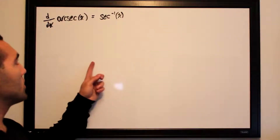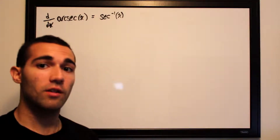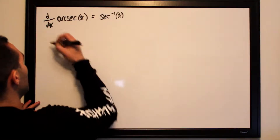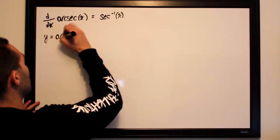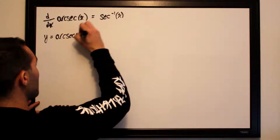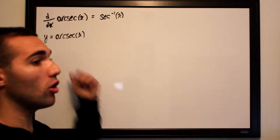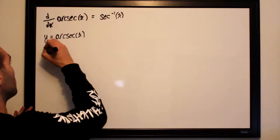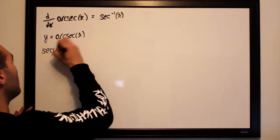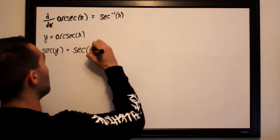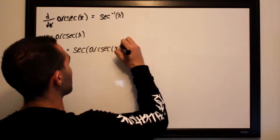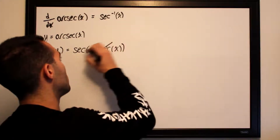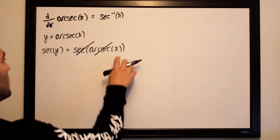First, we're going to take advantage of the fact that secant and arc secant are inverses of each other so we can isolate for x. We set y equal to arc secant of x, and we want x all alone. So we take the secant of both sides to cancel the arc secant out: secant of y equals secant of arc secant of x. Because these are inverses, they cancel, giving us secant of y equals x.